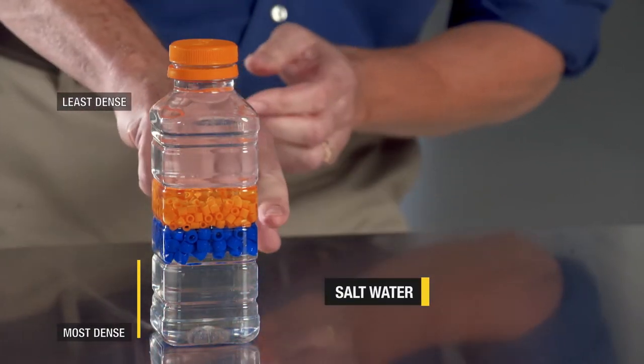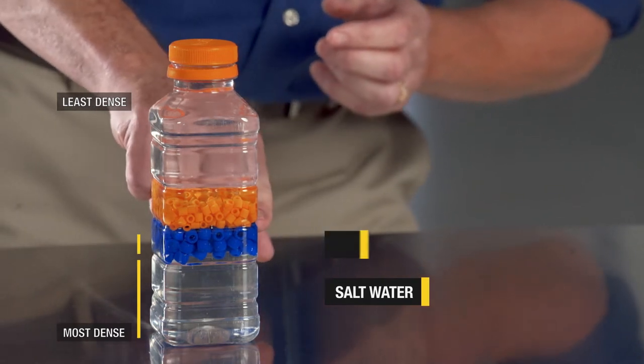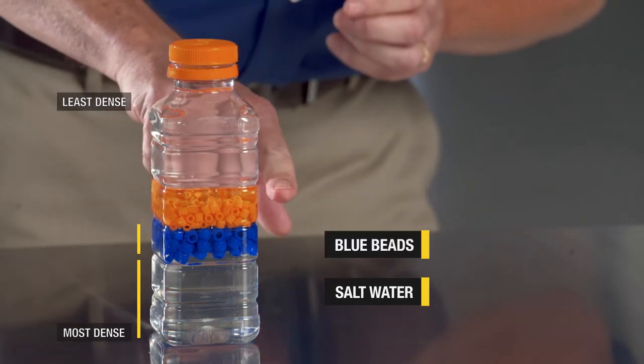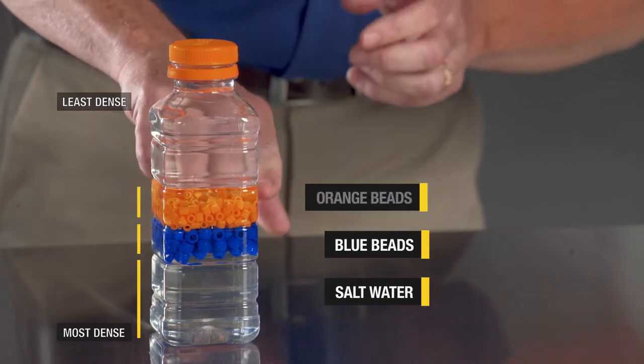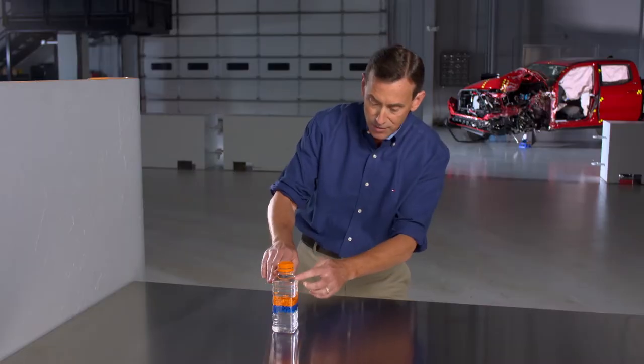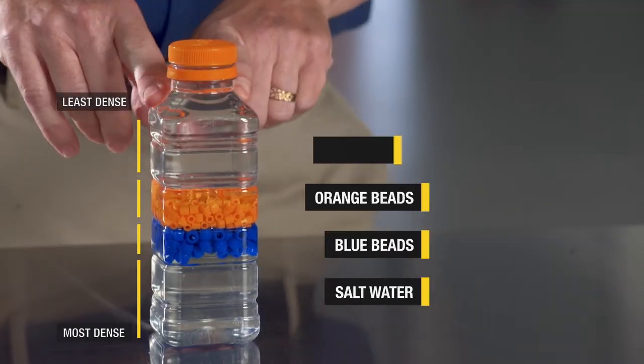And then the next least dense would be the blue beads, and then a little less dense, the orange beads. And then up top, even though this fluid looks like it's the same, it's alcohol. Rubbing alcohol, 91%.